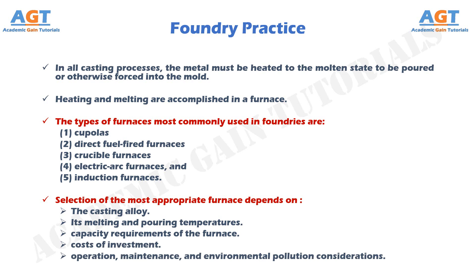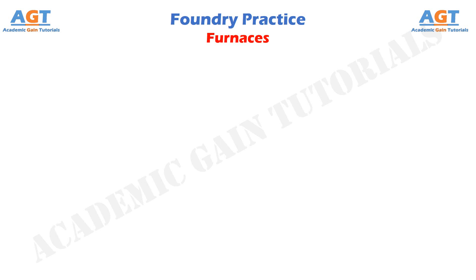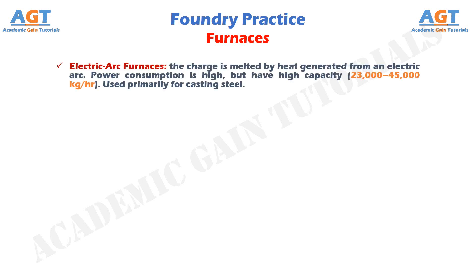We are going to study electric arc furnaces and induction furnaces in the next slides. In electric arc furnaces, the charge is melted by heat generated from an electric arc. Power consumption is high, but they have a high capacity of about 23,000 to 45,000 kg per hour. Used primarily for casting steel.